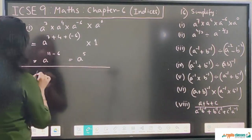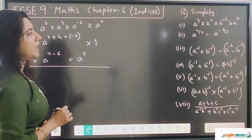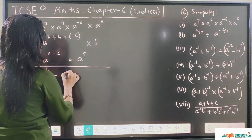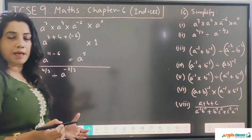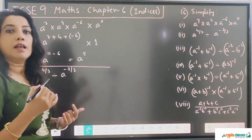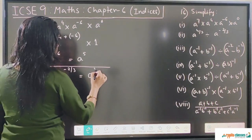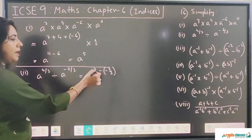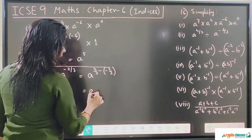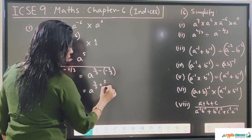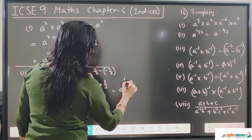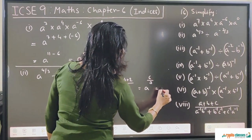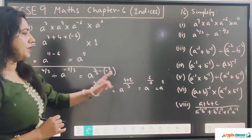The second question is a^(4/3) ÷ a^(-2/3). When bases are the same and we are dividing, we subtract the powers. So we write a^(4/3 - (-2/3)) = a^(4/3 + 2/3). Taking LCM as 3, the numerator gives 4 + 2 = 6, so it is a^(6/3) = a^2. So a^2 is the answer for the second one.